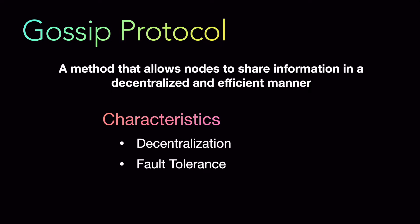Next is fault tolerance. Since information is spread across multiple nodes, the system is more robust and fault tolerant. If a node fails or goes offline, the information can still reach other nodes through alternative paths. Then there is scalability — gossip protocols are highly scalable because the communication load is distributed among different nodes, and the system can handle a large number of nodes without a significant increase in complexity.